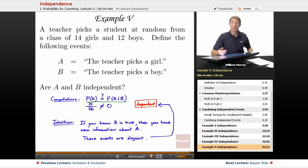P of A, what's the probability that we pick a girl? Well, there's 14 girls out of 26 total students. What's the probability that we pick a girl given that we picked a boy? That would be zero, because if we picked a boy, we couldn't have picked a girl. Now, those two numbers didn't come out to be equal to each other, so that's how we know that they're dependent. That's how you do it by the computations. You can also do it by intuition.